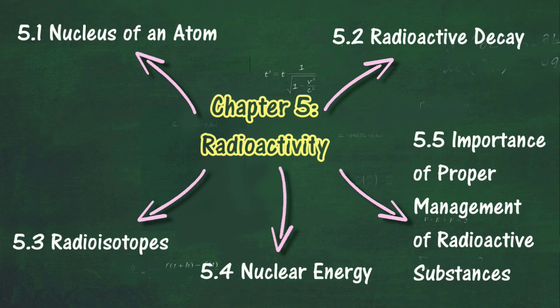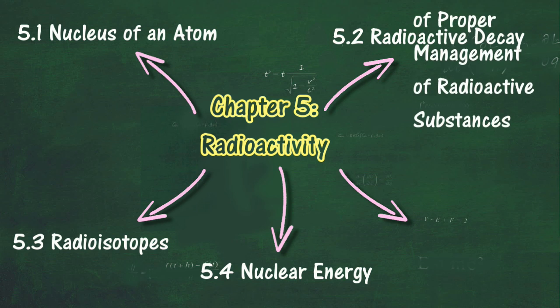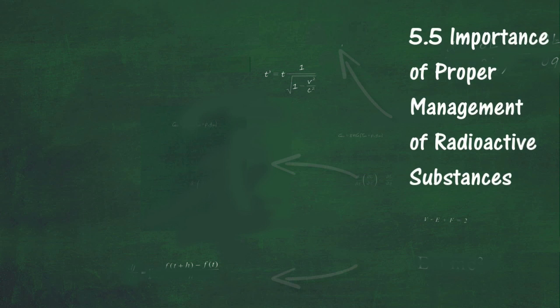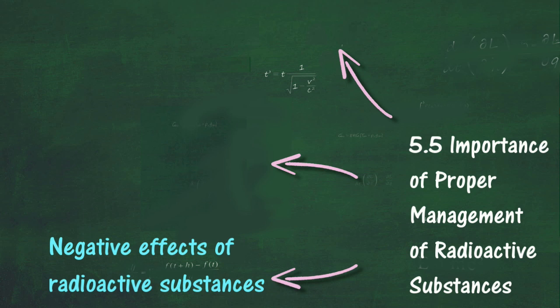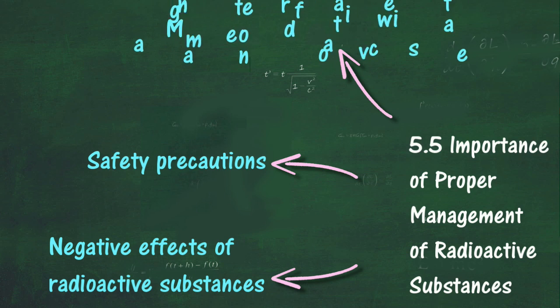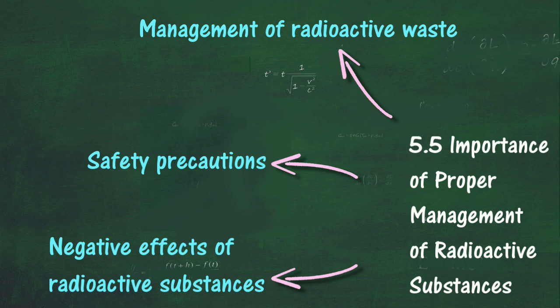At the end of this chapter, Section 5.5, we will learn about the importance of proper management of radioactive substances. At the end of this section, you should be able to describe the negative effects of radioactive substances, describe safety precautions needed in the handling of radioactive substances, and describe the management of radioactive waste. Thank you for taking the time to watch this.